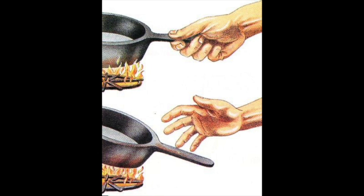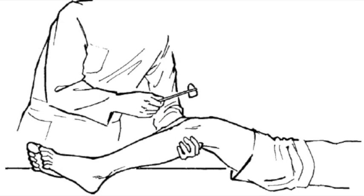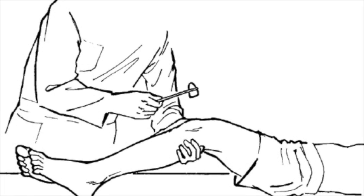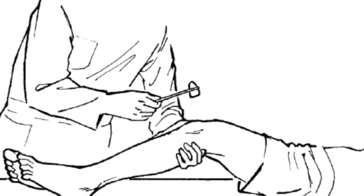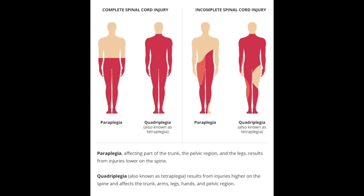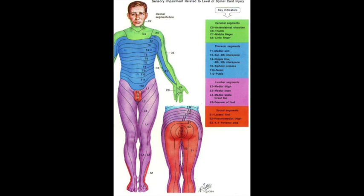Sensory motor impairment and reflex dysfunction form part of the classical presentation of these injuries. Injuries are referred to as complete or incomplete based on whether there is sensory, motor, or both sensory and motor impairment occurring at the site of the injury.